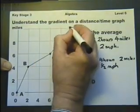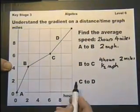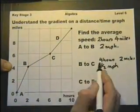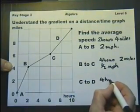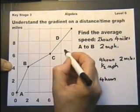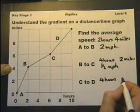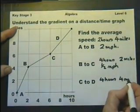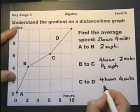Now let's look at C to D. C to D takes four hours to do four miles. So in other words it's one mile in each hour.